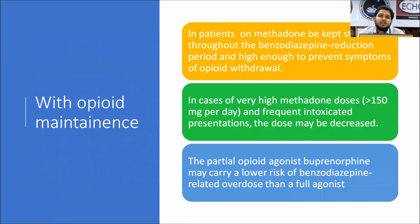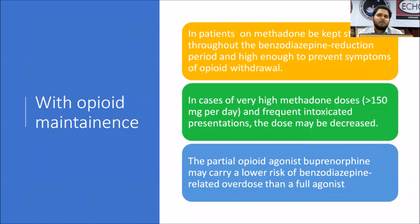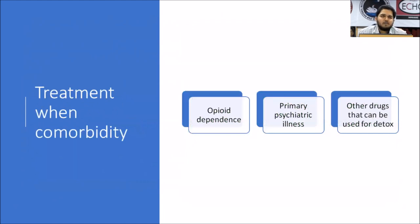In patients with comorbid opioid dependence, the combination poses significant risk of respiratory depression. If the patient is on a stable opioid dose, continue that dose and treat the benzodiazepine dependence. If methadone doses exceed 150 mg, extreme caution is required when prescribing benzodiazepines. When both opioid and benzodiazepine withdrawal are present simultaneously, prioritize treating benzodiazepine withdrawal first, as it can be life-threatening, whereas opioid withdrawal generally is not.